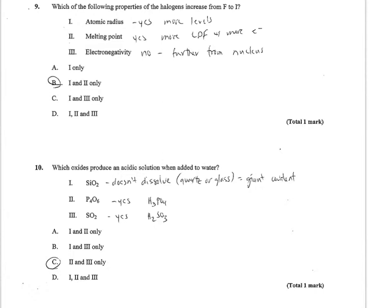Number 10 was a little bit tricky. A lot of you chose D, 1, 2, and 3, because you remember that nonmetals tend to produce acidic solutions. But the catch here was SiO2 forms this giant covalent bond. It's what we usually think of as quartz or glass, and that doesn't dissolve in water. So it's not going to produce any kind of solution because it's not going to dissolve. So only 2 and 3 will produce acidic solutions.